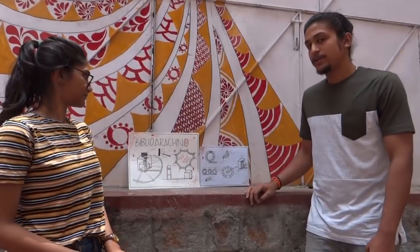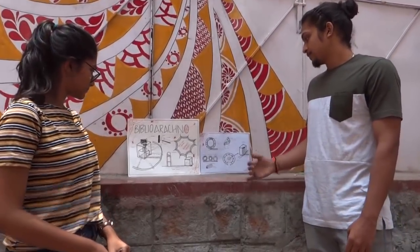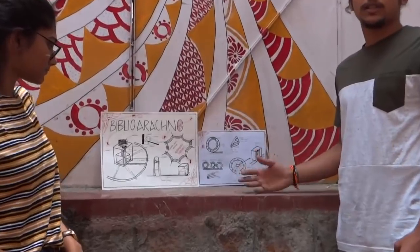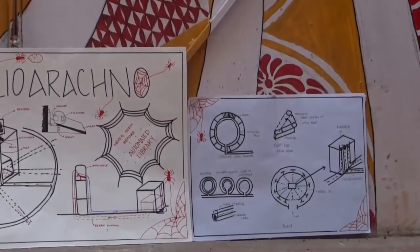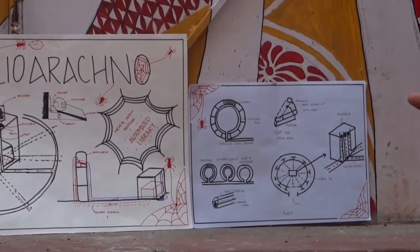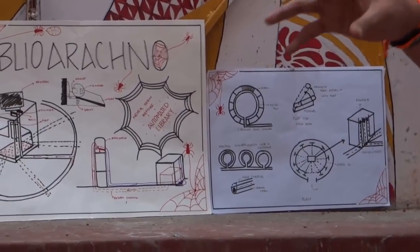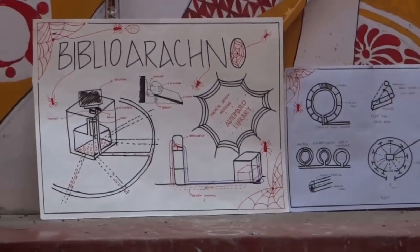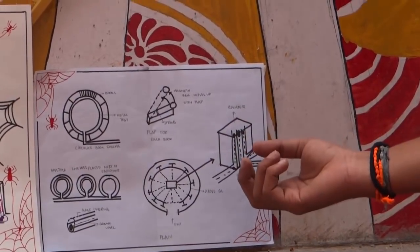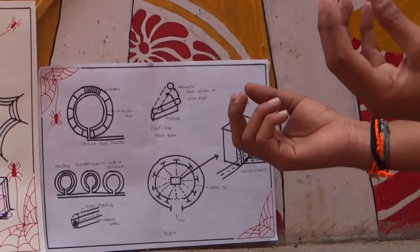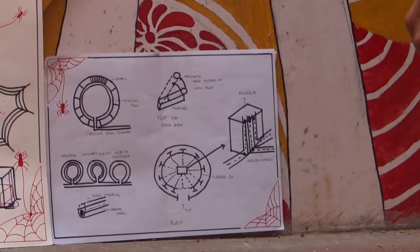The basic idea of our product was that we designed an automated library where the customer can just take the book without a librarian actually being there. This is the plan of our library, which is a centralized plan with a central node and a circular shell around it.